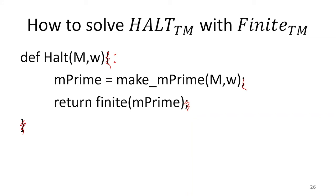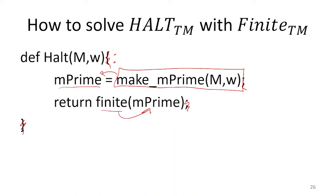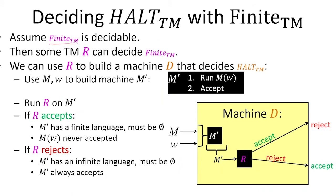So now if we have this FINITE function, we can use it to solve HALT: first make M prime by building the source code using M and W, then invoke FINITE on M prime and that gives us the answer. More formally: assume towards a contradiction that FINITE is decidable. That means there's some Turing machine R that decides FINITE for us, and we're going to use R to build a machine D that decides HALT.